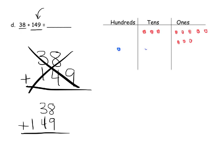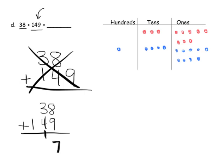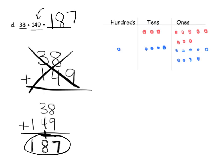And 9 in the ones place. Looking at the standard algorithm first: 8 plus 9 gives us 17 in the ones place, which means we can bundle 1 in the tens column and have 7 left over in the ones column. Now we have 3 in the tens, 4 in the tens, and a new one in the tens, so 3 plus 4 plus 1 gives us 8 in the tens column. In the hundreds column, we have 1, for a total of 1 in the hundreds column. Our answer is 187.